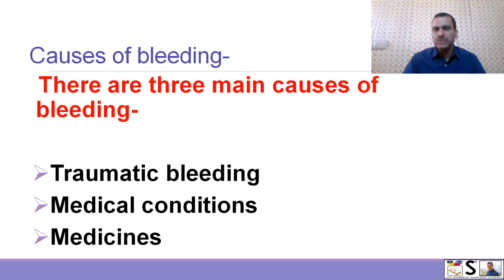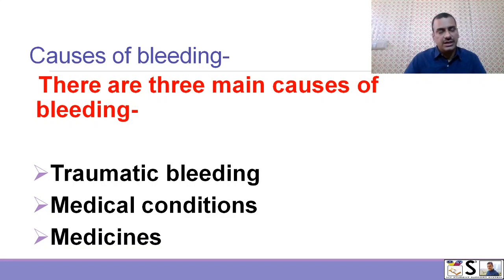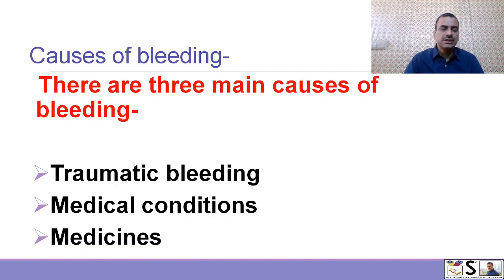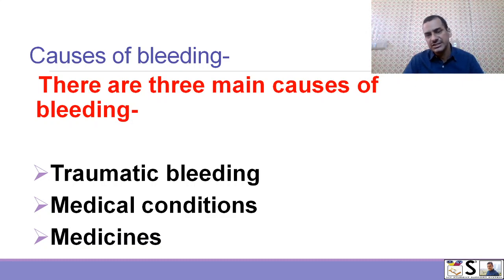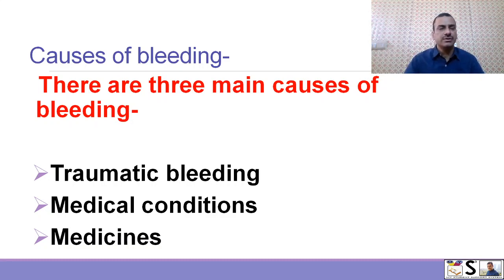We should know what are the causes of bleeding. There are three main causes of bleeding: number one, traumatic bleeding — meaning by trauma or accidents; number two, medical conditions; and number three, some medicines. We will discuss these three points one by one.